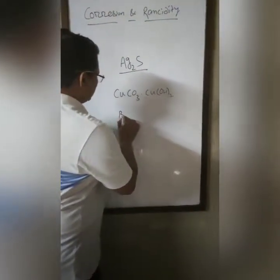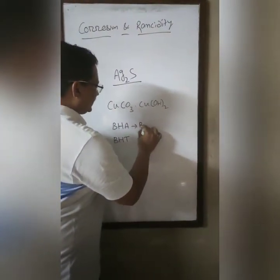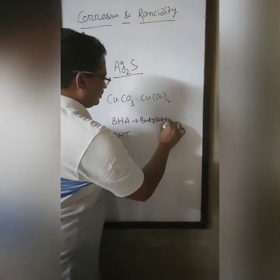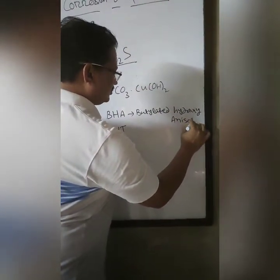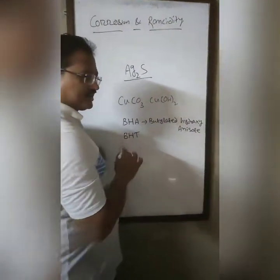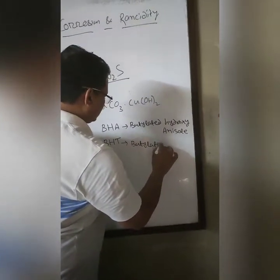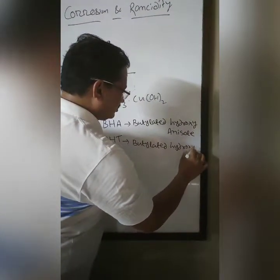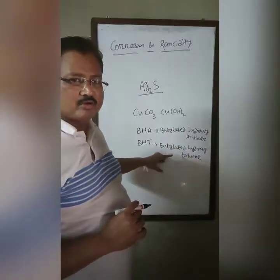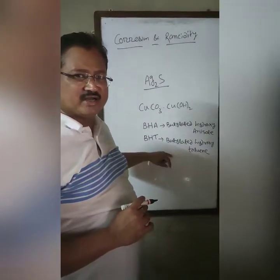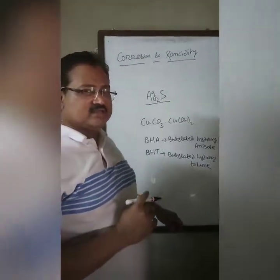Other antioxidants include BHA and BHT — butylated hydroxyanisole. These are substances which act as antioxidants. Although these substances are not mentioned in your book, you can remember that BHA and BHT are antioxidants which can be used to prevent the rancidity of certain substances.